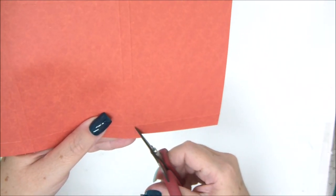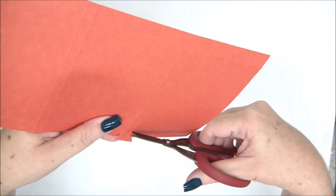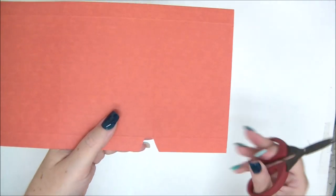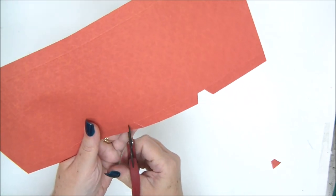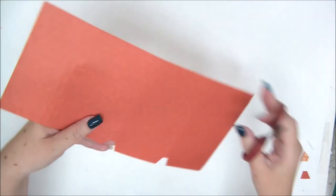Now we're going to cut diagonally on both sides of the fold lines and on the horizontal line like this.